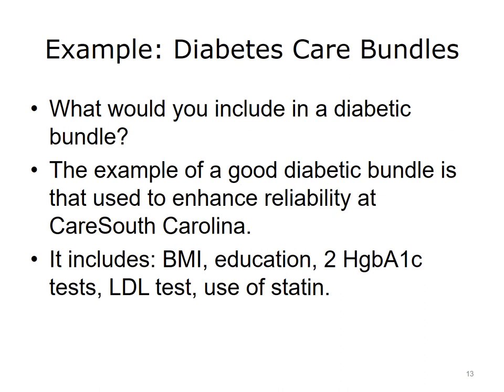You could truly incorporate a number of measures into a bundle for diabetic care. A good example is the work of Care South Carolina, a private nonprofit health and human services provider. They have conducted transformational work ensuring reliability of a significant amount of their processes. Their diabetic bundle includes recording body mass index (BMI), diabetes mellitus (DM) education, two hemoglobin A1C (HbA1C) measures in the past year, LDL cholesterol measure in the last year, and patients on statin if over 40. In building a bundle, you should ask yourself which changes will help improve morbidity and mortality when used in combination.